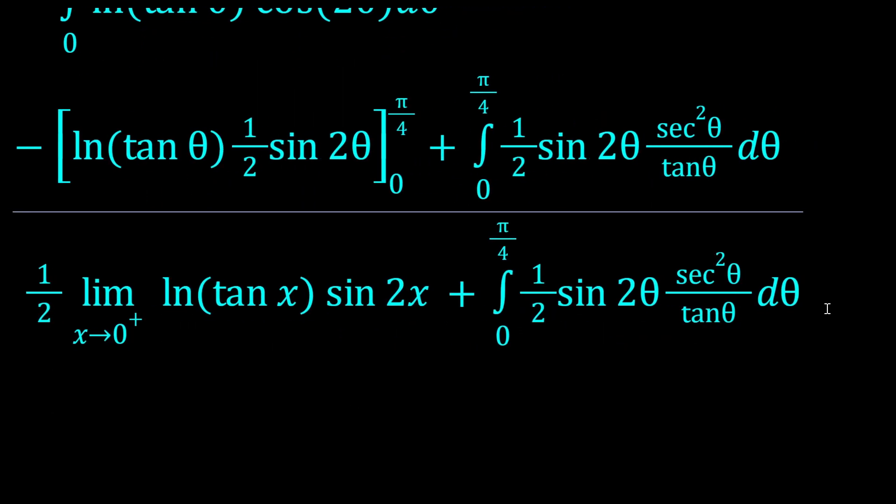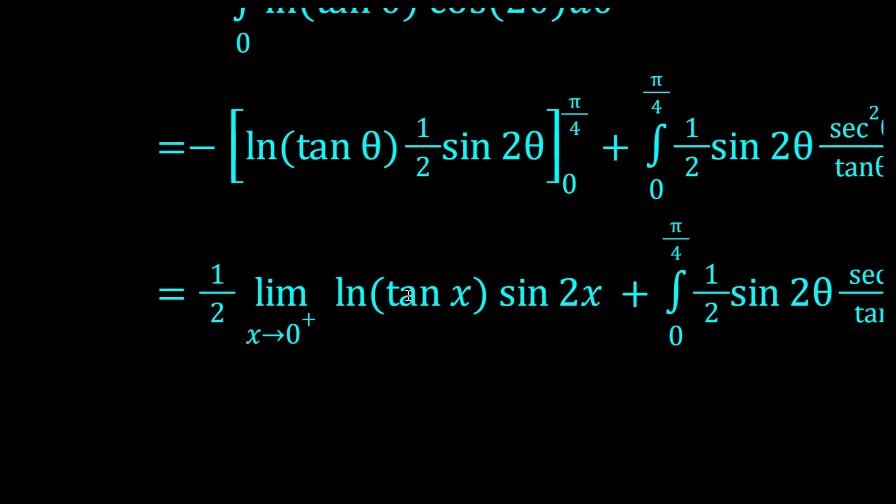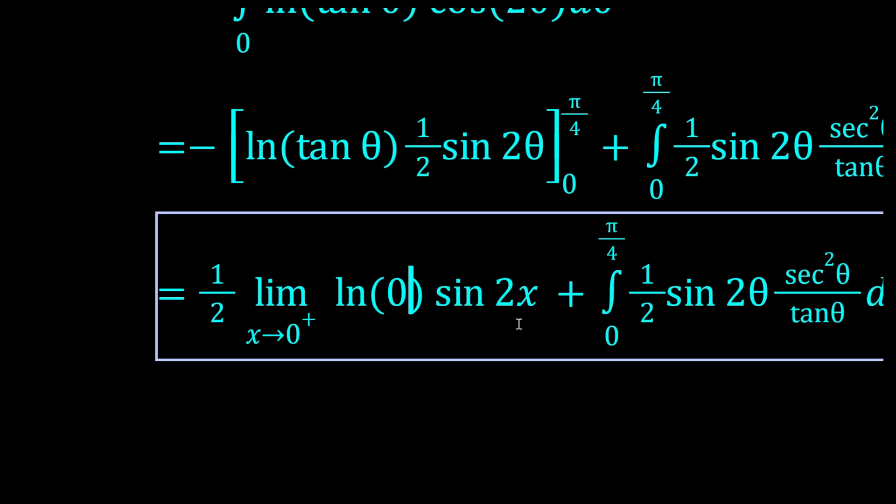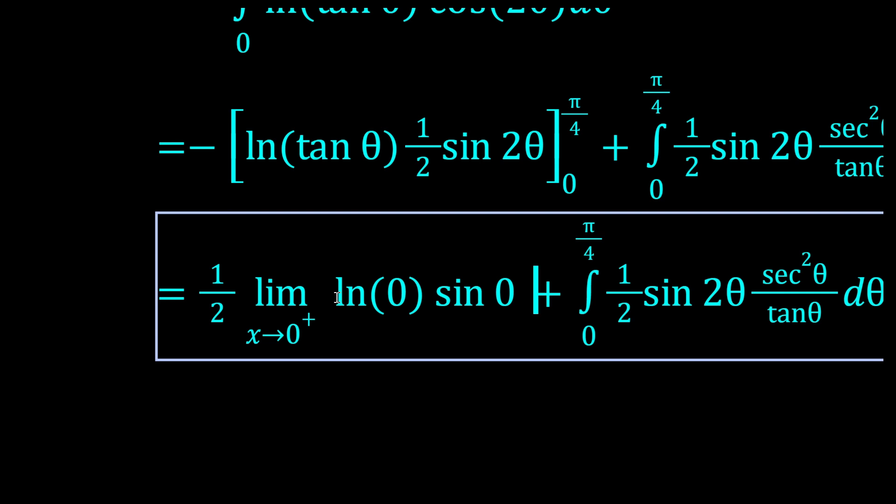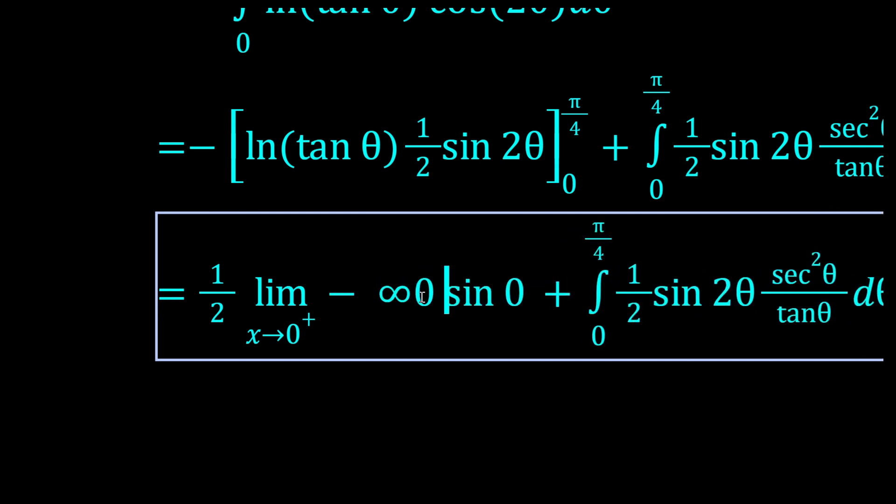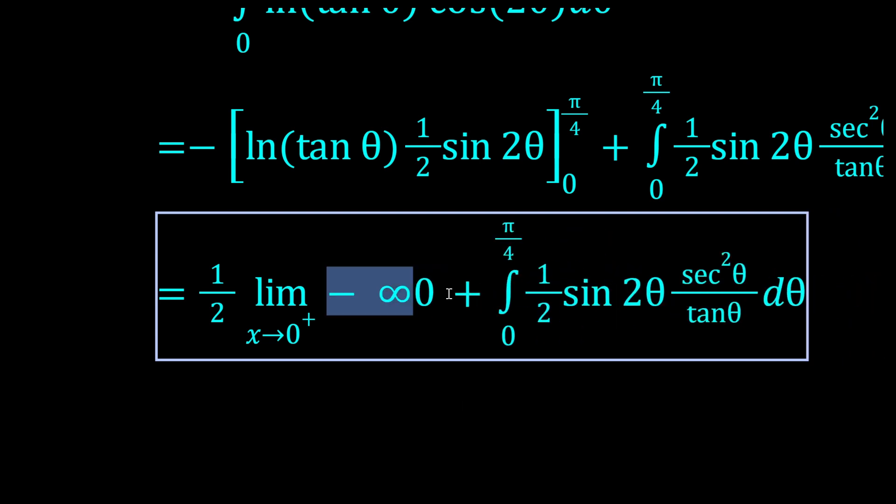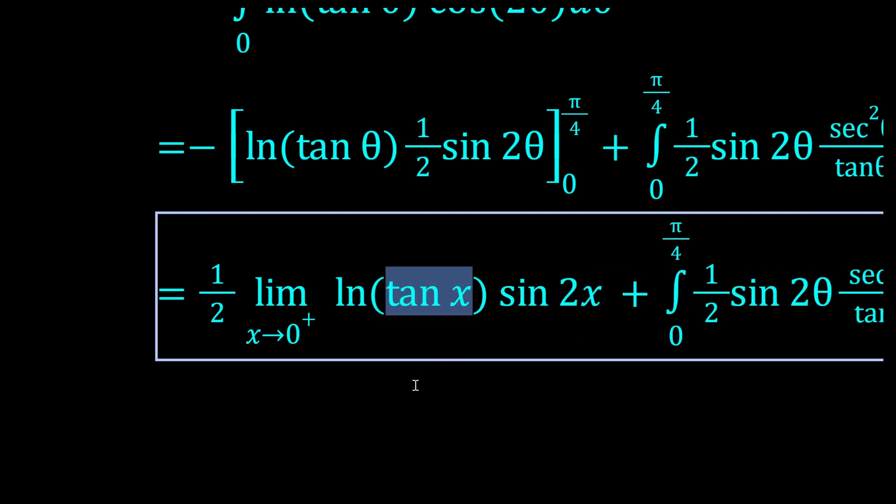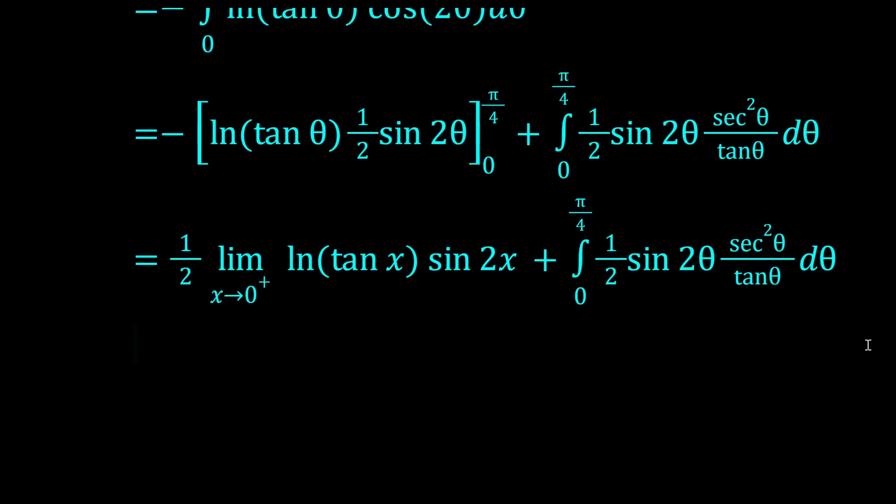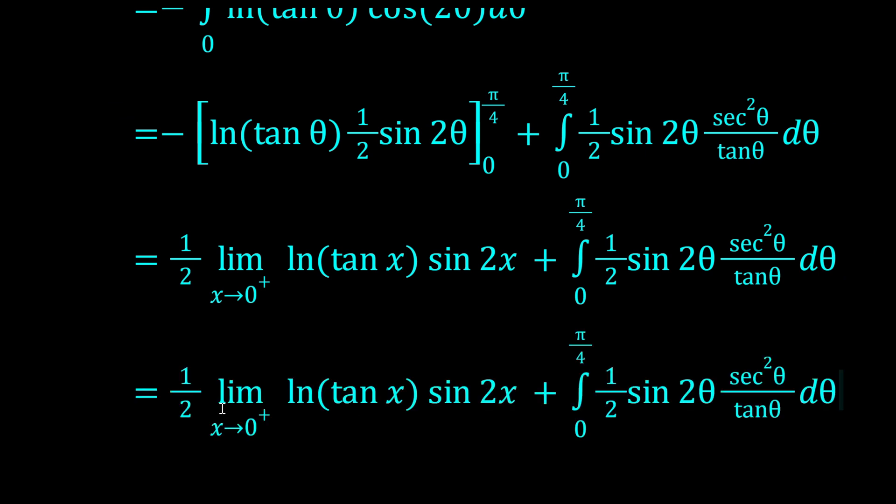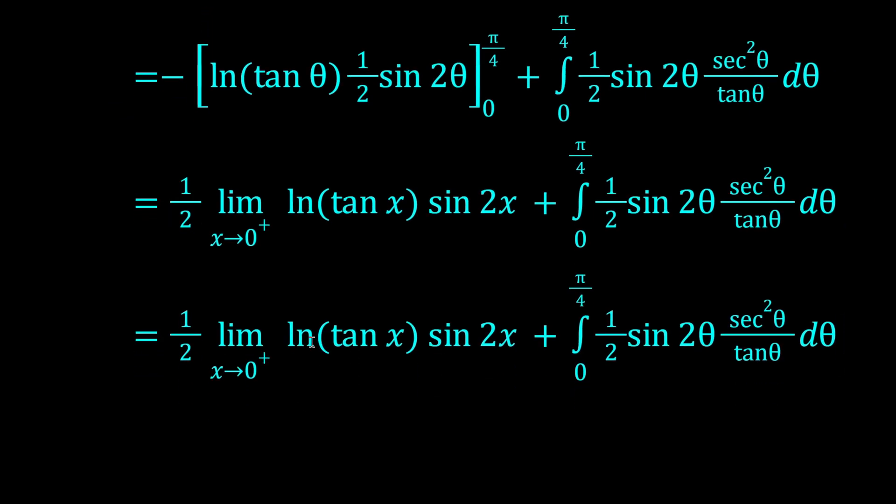We might have to do L'Hopital's rule. Okay, so when we sub in 0, or when we just put in 0 blindly, we get log 0 times 0. Log 0 is minus infinity, and sin 0 is just 0. Minus infinity times 0 is an indeterminate form, so we can't really conclude anything from that. We have to do some more work.